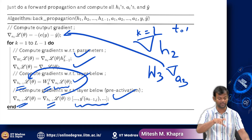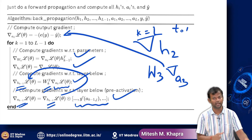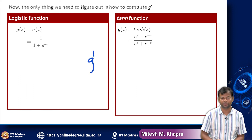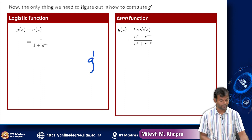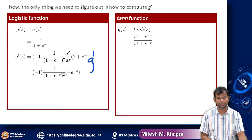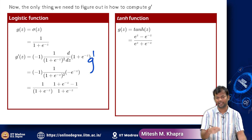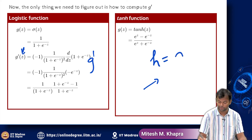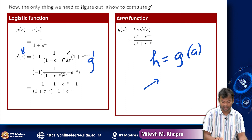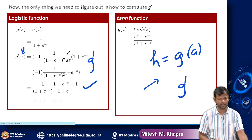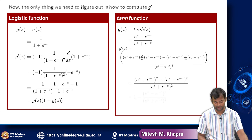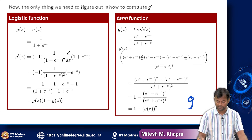That is what the entire backpropagation algorithm is — coded in just a few steps, a small loop, and all of these are matrix-vector multiplications. One last thing was the derivatives, the g-primes, which I did not fully cover, but they are easy to compute. If g is the logistic function, you can write a function to compute g-prime. It takes any value as input — you pass a and substitute into the formula. In fact, g-prime can be written simply as g(z) times (1 minus g(z)), and for tanh it is 1 minus g(z) squared. So those g-primes are easy to compute.